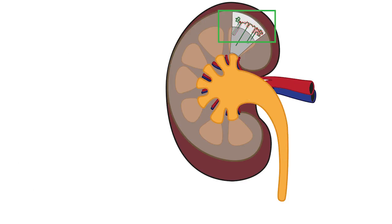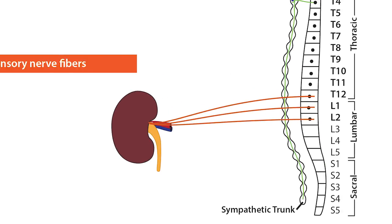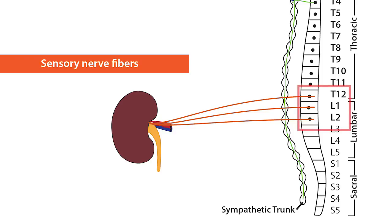These sensory or afferent fibers exit the kidney and form synapses along the T12, L1, and L2 spinal nerve tracts.